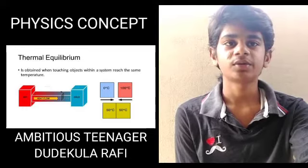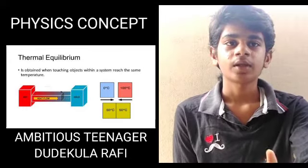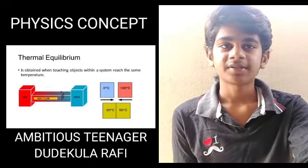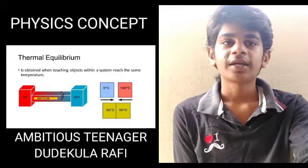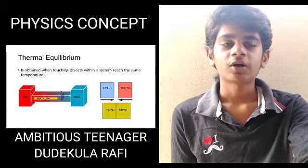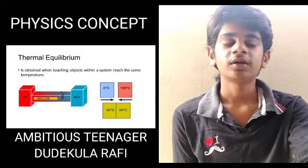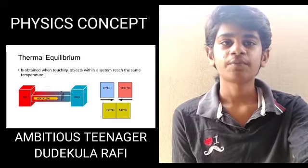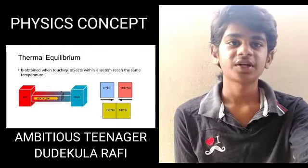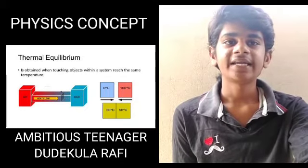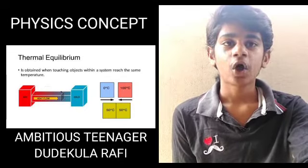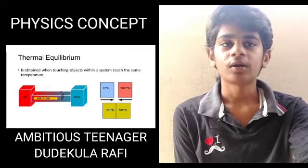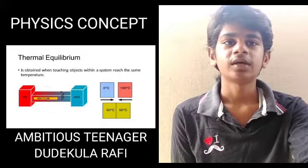The temperature of the cold body is low. Heat flows from the hot body to the cold body. This follows the principle of methods of mixture: heat lost by a hotter body is equal to heat gained by a colder body.